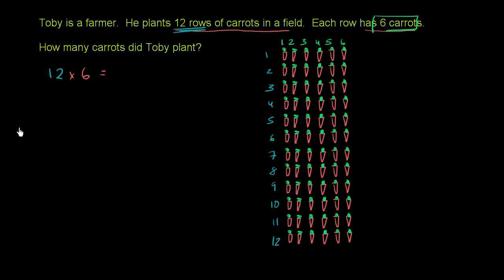If you remember your multiplication tables up to 12, you'll remember that 12 times 6 is 72. So he has 72 carrots,